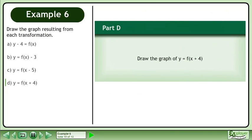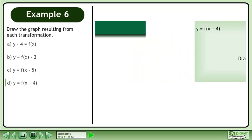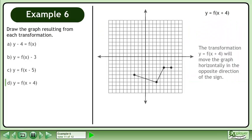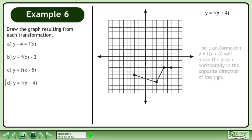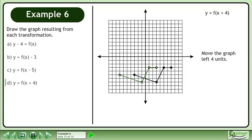In part D, we'll draw the graph of y equals f. The transformation y equals f will move the graph horizontally in the opposite direction of the sign. Move the graph left 4 units.